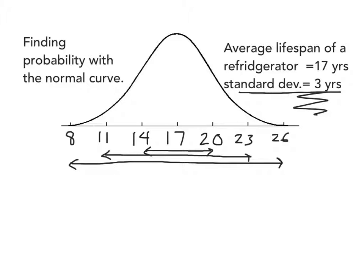So that's called the 68-95-99.7 rule. It's also called the empirical rule. These are just ways to talk about the normal curve, and those aren't exact percentages, but pretty rough estimates to the exact percentage.